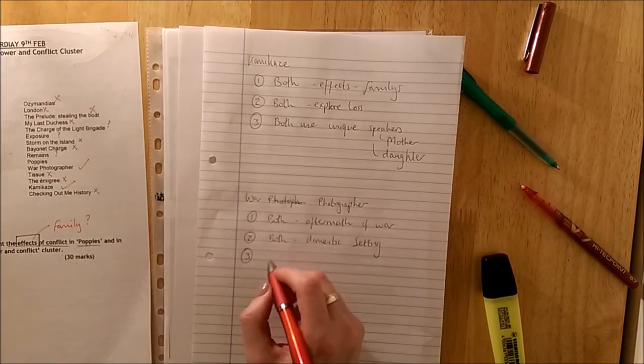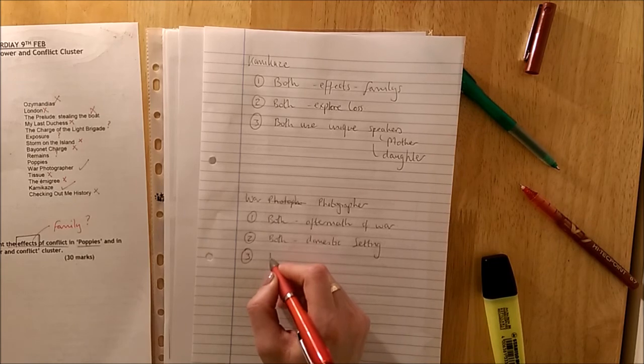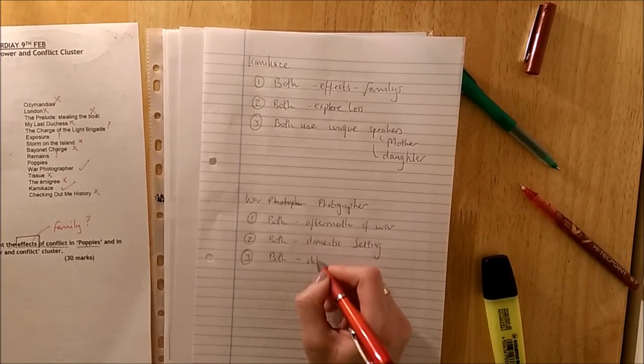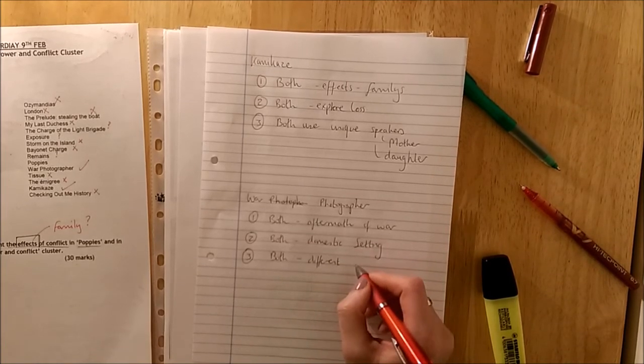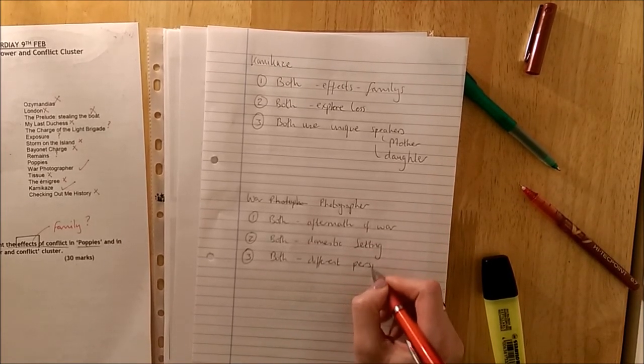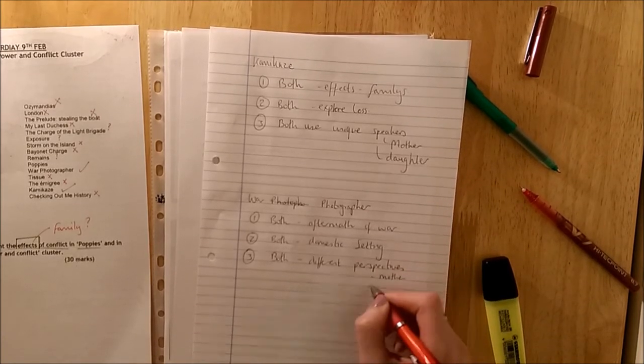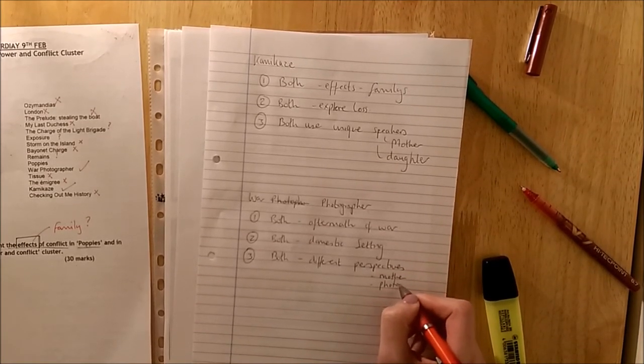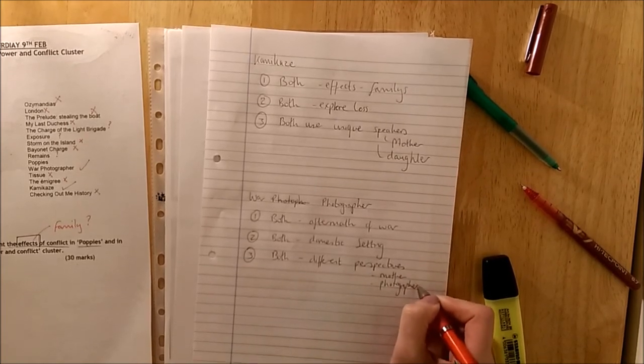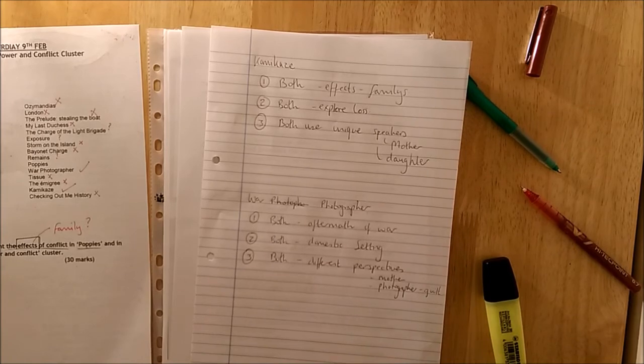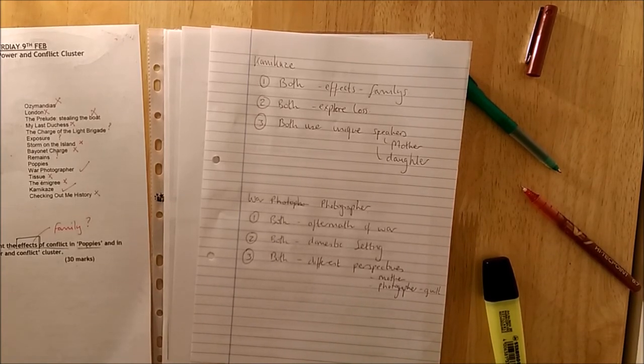And then again you might talk about the different perspectives. So both have, you know, this time it's a bit different. It's not family and family. But different perspectives. You've got the mother and you've got the photographer. A professional who's seen terrible awful things and the guilt that they now feel I guess.